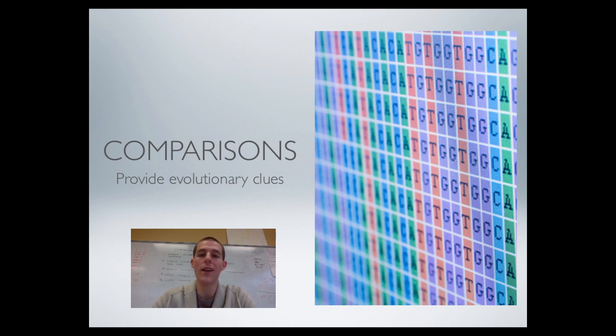Comparisons can also be used to show how long it's been since two organisms diverged because genetic material picks up mutations at a fairly predictable rate. So scientists can look at how many mutations are different or how much genetic material is different between two organisms and make some guesses or estimates about how long it's been since those two organisms last had a common ancestor.